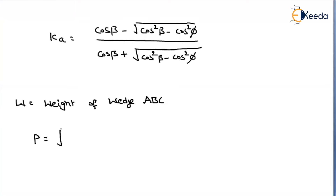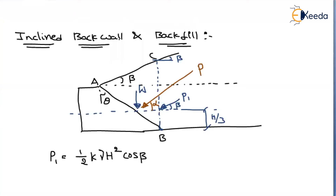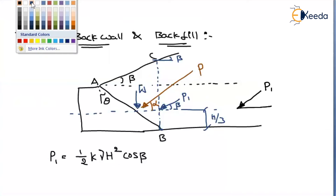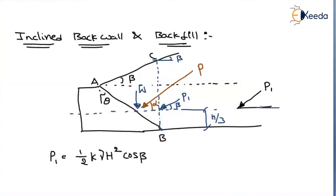In general, P = √(Fx² + Fy²). What about Fx and Fy? Now if I resolve P1 — suppose P1 is acting at angle beta — the x-component is P1·cos β and the y-component is P1·sin β.